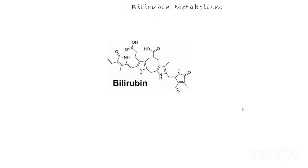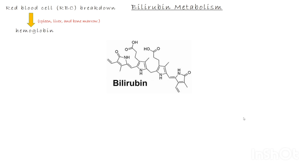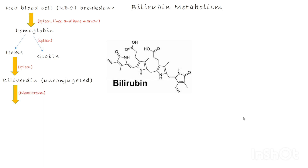Let's now understand how bilirubin is formed and processed in our body — this is called bilirubin metabolism. Our red blood cells have a lifespan of about 120 days. When they get old or damaged, they are broken down in the spleen, liver, and bone marrow. During this breakdown, hemoglobin — the protein that carries oxygen — is released. Hemoglobin is split into two parts: globin, which is broken down into amino acids, and heme, which is converted into a green pigment called biliverdin, and then into a yellow pigment called unconjugated bilirubin.